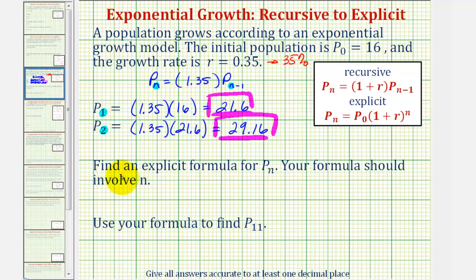Next, we're asked to find the explicit formula for p sub n, which is given here for exponential growth. P sub n equals p sub zero times the quantity one plus r, raised to the power of n. We already have all the information we need: p sub zero equals 16, and r equals 0.35.